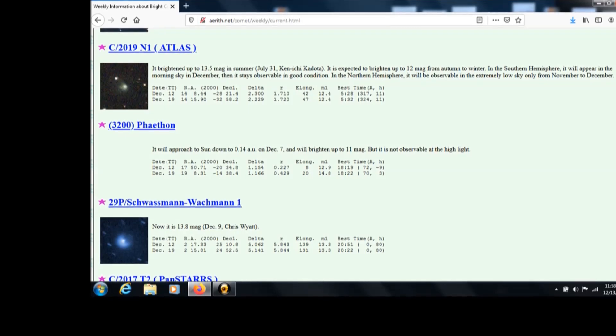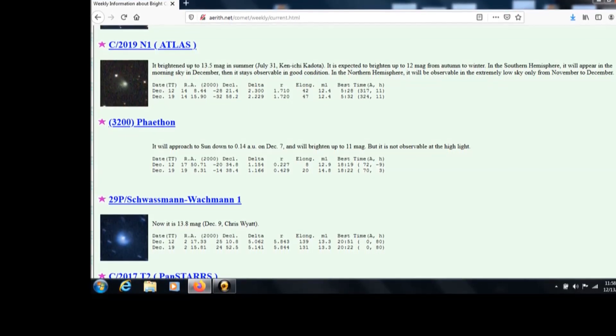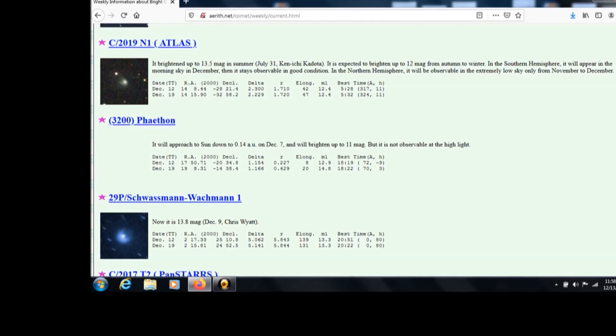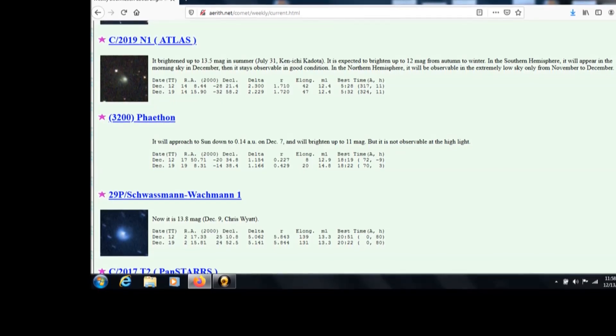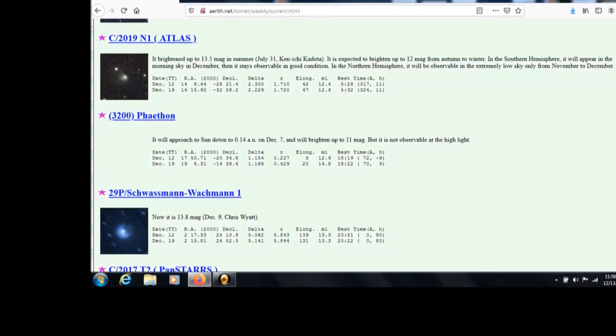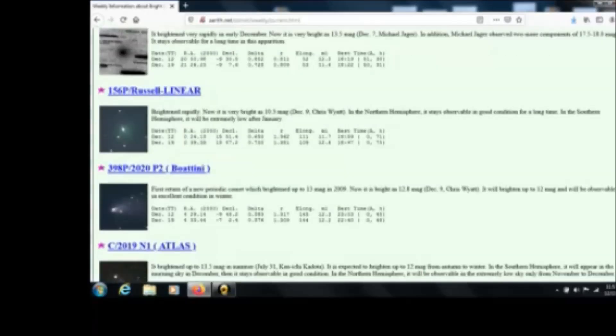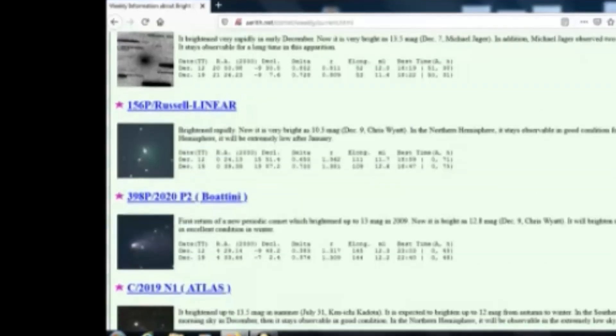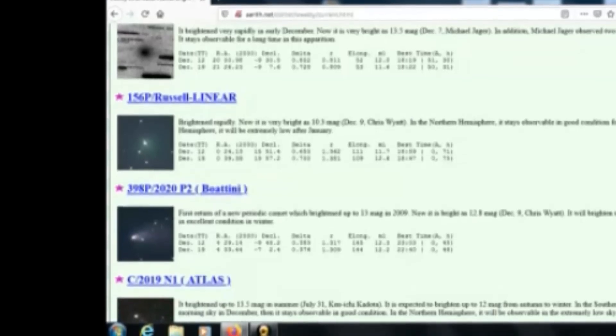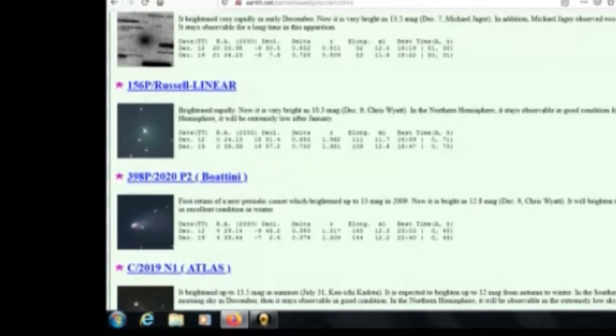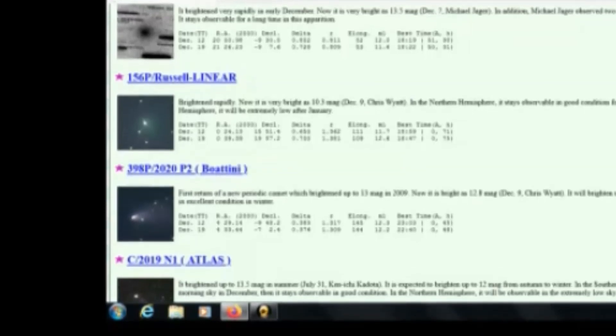398p 2020 P2 Boatini. Come on, that's too many numbers. A new periodic comet. How do we have a new periodic comet? We should know about them. Why? Because they're periodic. They've been here before. Oh, a new periodic comet. Hmm, what does that mean? But 12.8 magnitude, December 9th. Will brighten to 12 magnitude and will be observable in excellent condition in winter, they say.